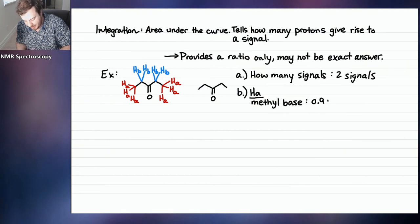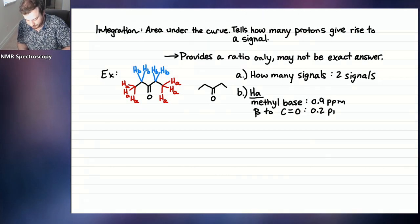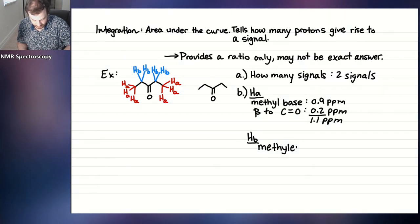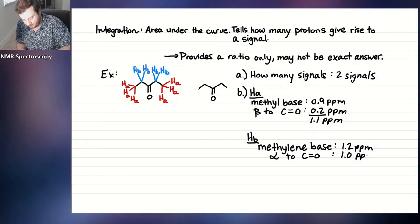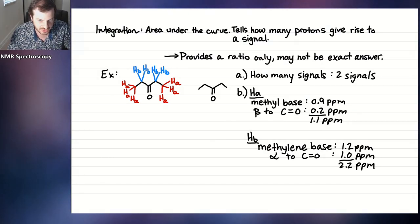For HA, we know that's a methyl base at 0.9 ppm. These methyl groups are beta to the C=O double bond, which is one of our modifiers at plus 0.2 ppm, giving us 1.1 ppm. For HB, we have a methylene base at 1.2 ppm, and this one is alpha to the C=O, which has a value of plus 1.0 ppm, giving us 2.2 ppm.